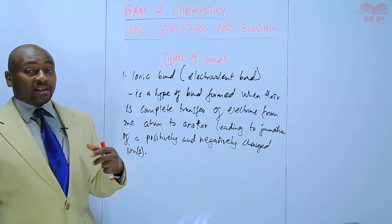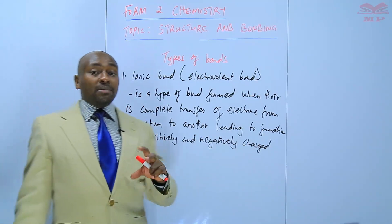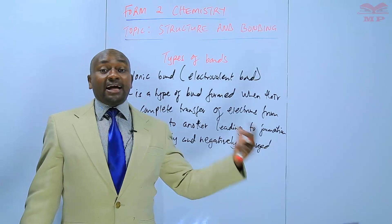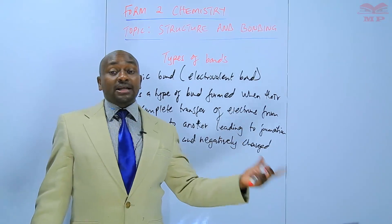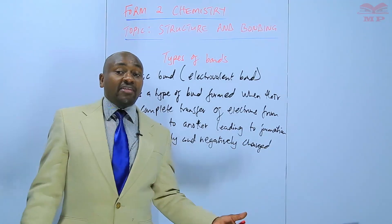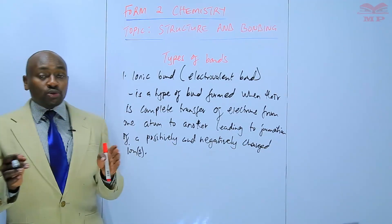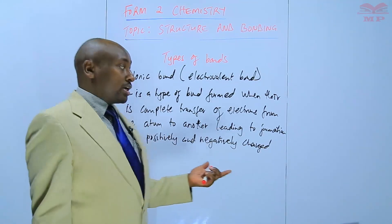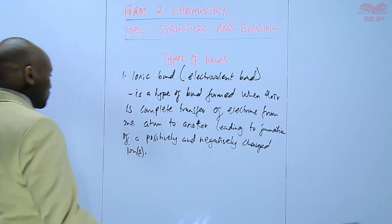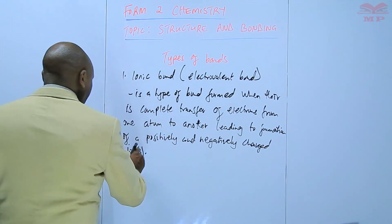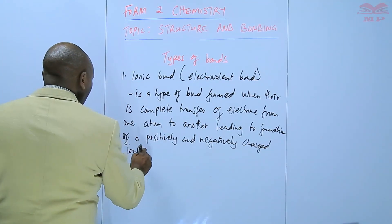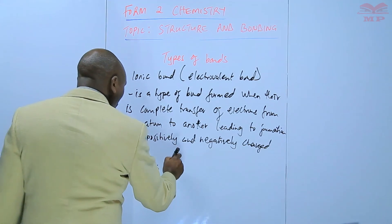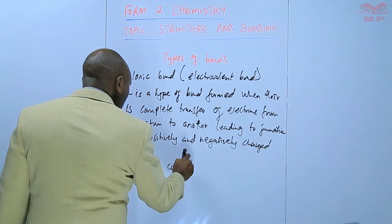As a result of that, the metal becomes positively charged and the non-metal becomes negatively charged. Then the attraction between the two creates an ionic bond.